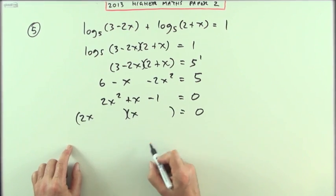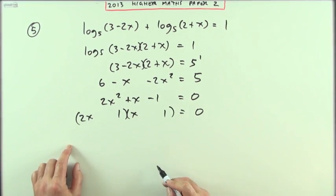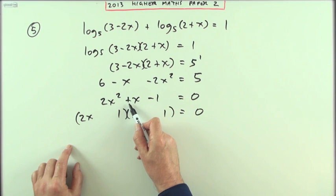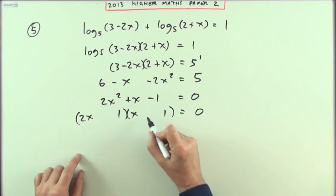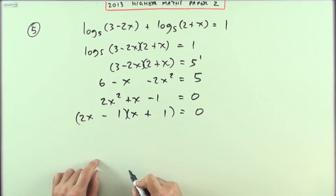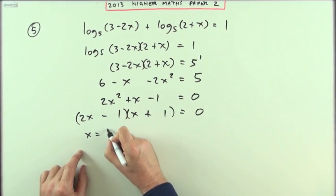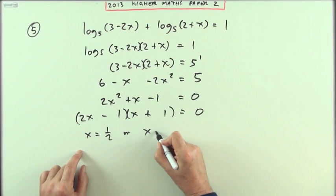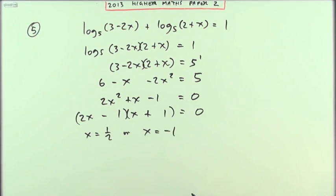2x squared can only be 2x times x. 1 can only be 1 times 1. The sign of the middle term goes to the larger product, that's the 2. And this says the end product should be a negative, so they must have opposite signs. And then I get two answers. I've either got x equals a half or I've got x equals negative 1. And that's more or less it.